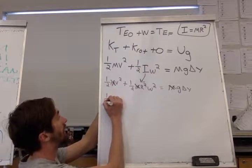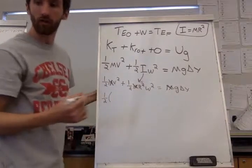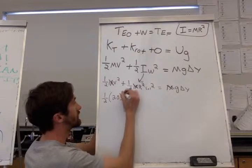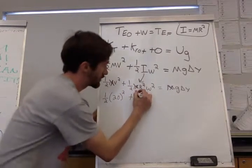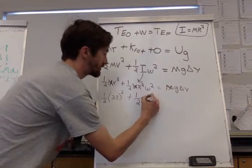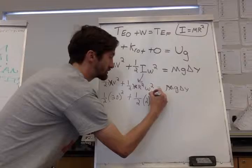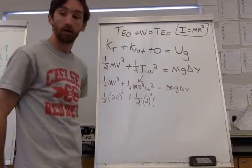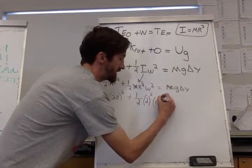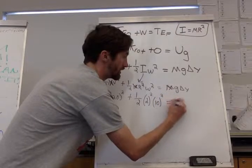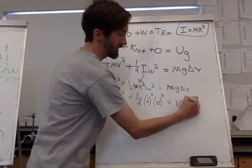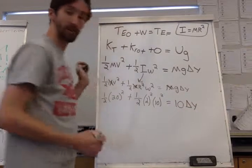So one half, that velocity was 20 squared plus one half. My radius is 2 squared. My rotational velocity is 10 squared. And we know g is 10 and delta y is our unknown.